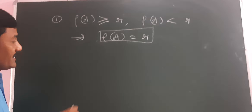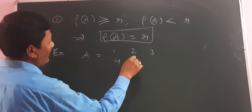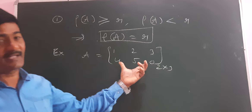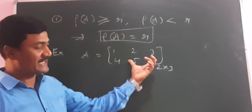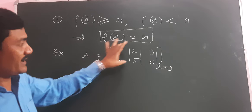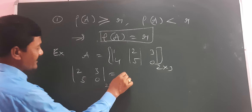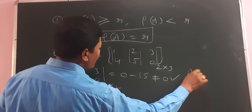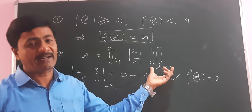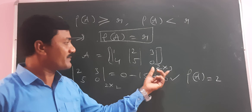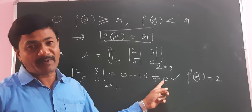Example one: Suppose A equals the matrix [1, 2, 3; 4, 5, 0]. This is a 2×3 matrix. To find the rank of this matrix, we look for at least one minor of order 2 whose determinant is not zero. Consider the 2×2 submatrix [2, 3; 5, 0]. Its determinant is 0 minus 15, which is not equal to zero. Therefore, rank of A equals 2. Because there is no minor of order 3 — a 3×3 minor cannot exist in a 2×3 matrix. The rank of the matrix is the minimum of its order, since there exists at least one minor of order 2 whose determinant is not equal to zero.